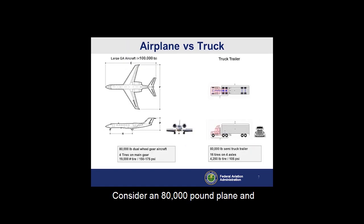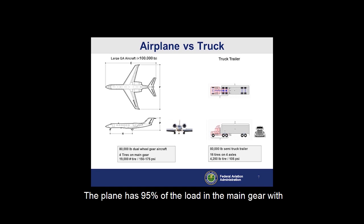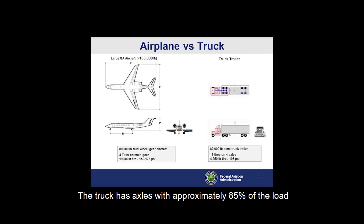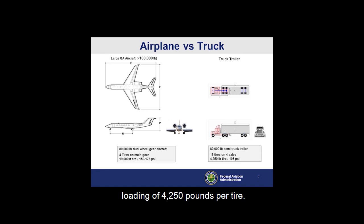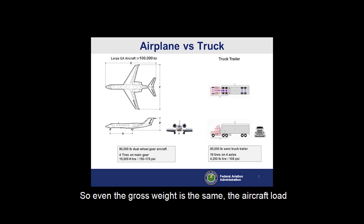Consider an 80,000 pound plane and an 80,000 pound truck. The plane has 95% of the load in the main gear with four tires, meaning a loading of 19,000 pounds per tire. The truck has axles with approximately 85% of the load on four axles with four tires per axle, meaning a loading of 4,250 pounds per tire. So even when the gross weight is the same, the aircraft load per tire is 4.5 times higher than the truck tire load.